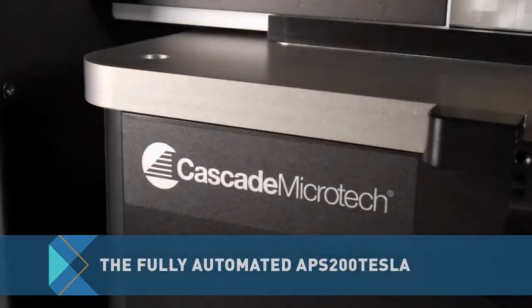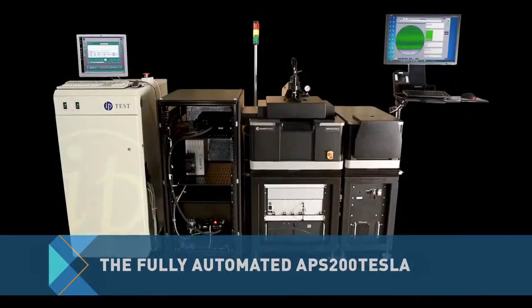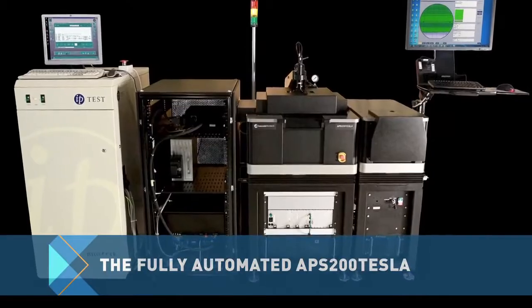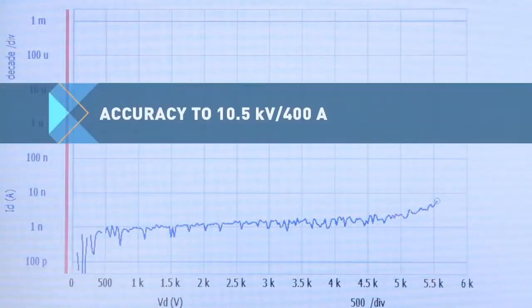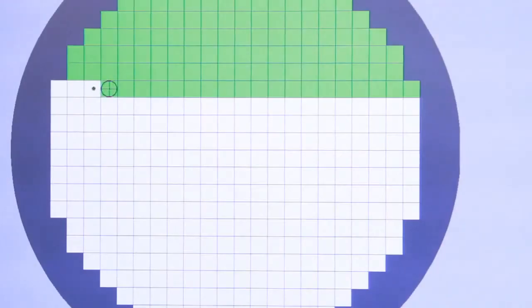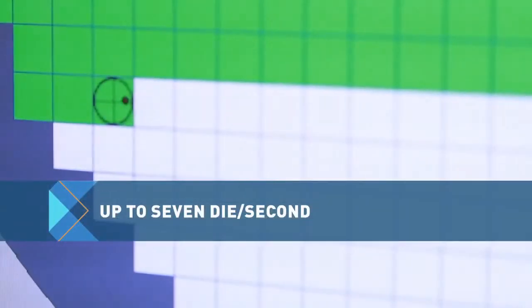Introducing the fully automated APS 200 Tesla wafer prober for production test of high power devices with accurate testing up to 10.5 kilovolts and 400 amps and stepping speeds up to seven die per second.